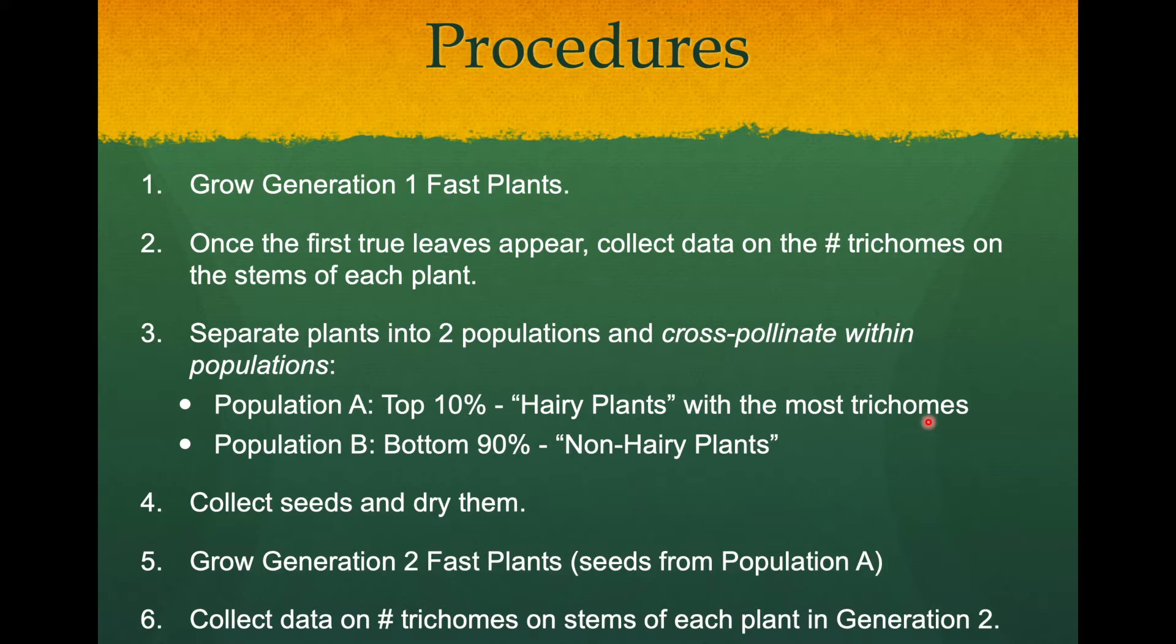So these were the procedures, as you can remember. We grew the first generation, separated the two phenotypes, the really hairy plants versus the not-so-hairy plants, allowed them to cross-pollinate within their subgroups, and then we collected the seeds and let them dry. We were hoping to plant them probably around this time and collect data on generation two.